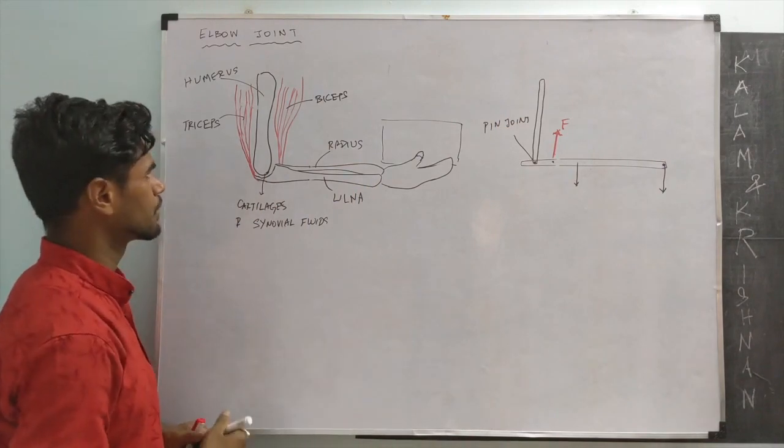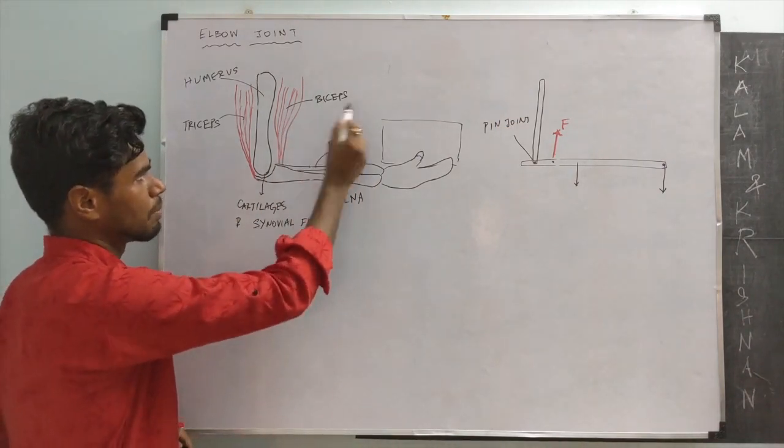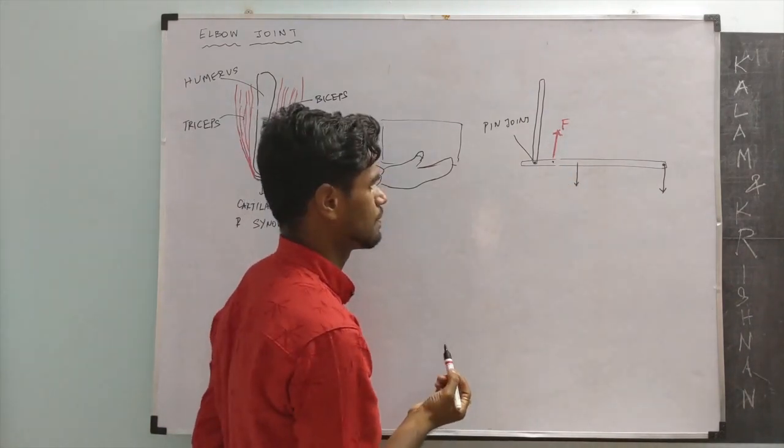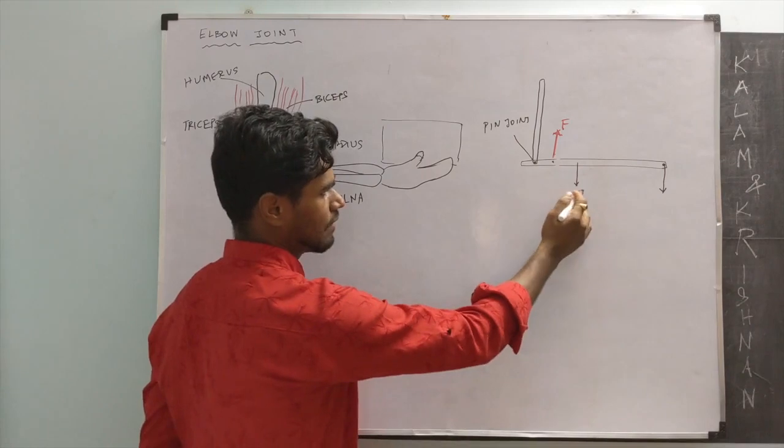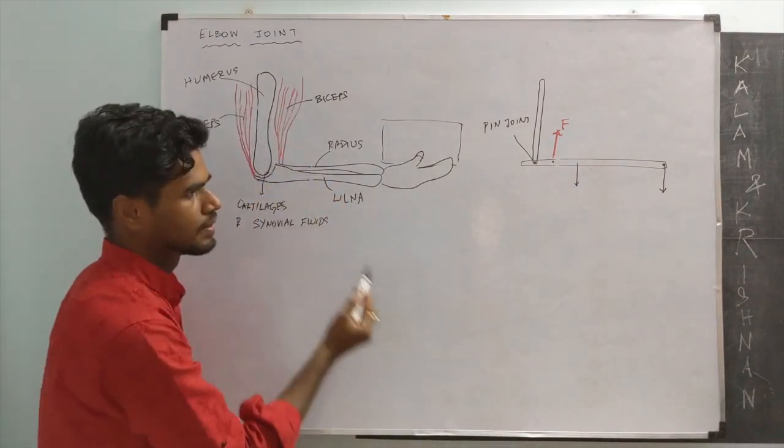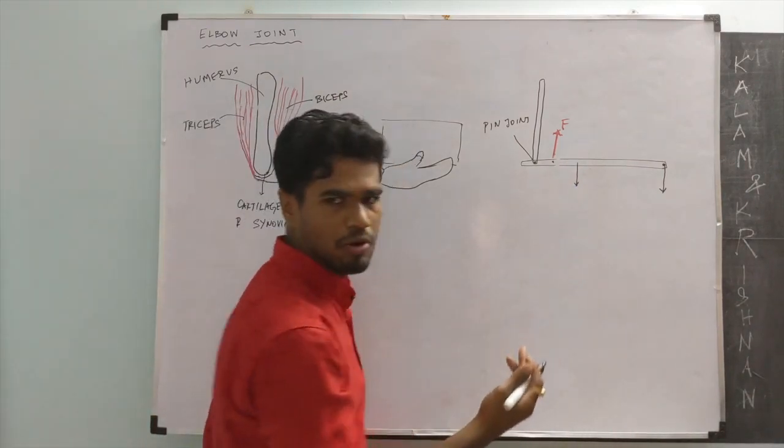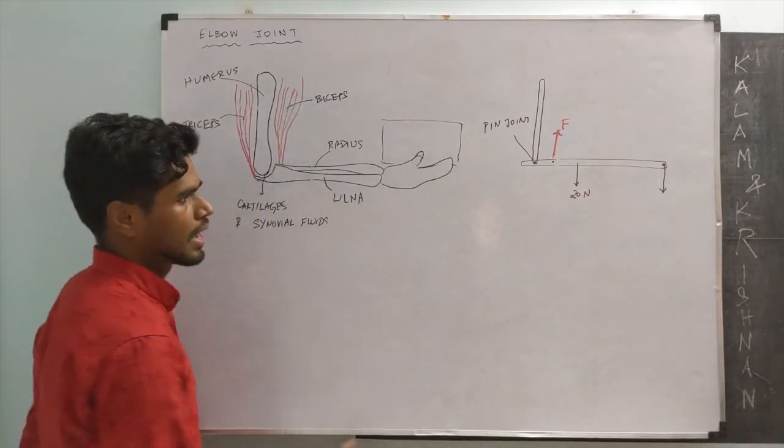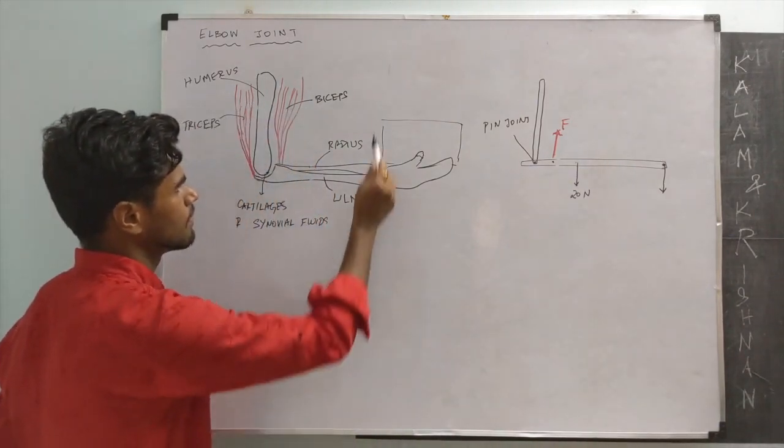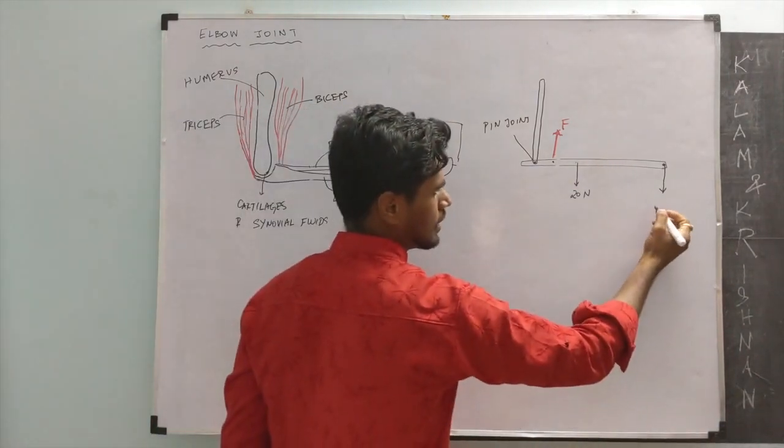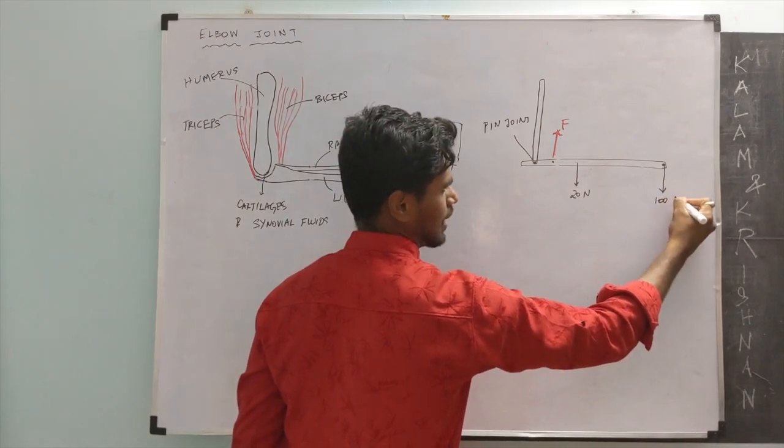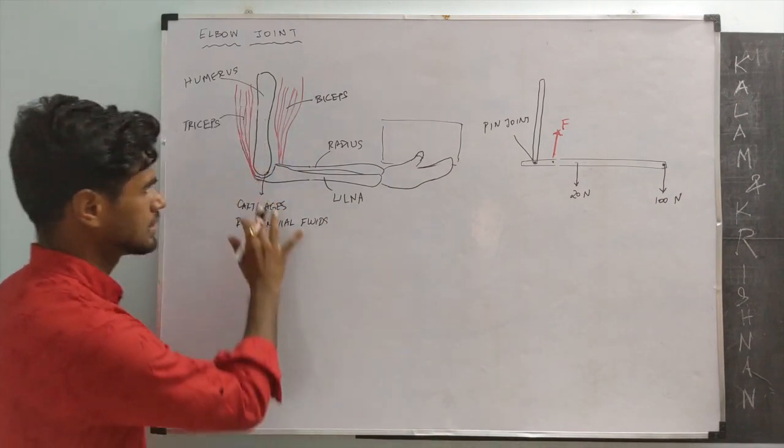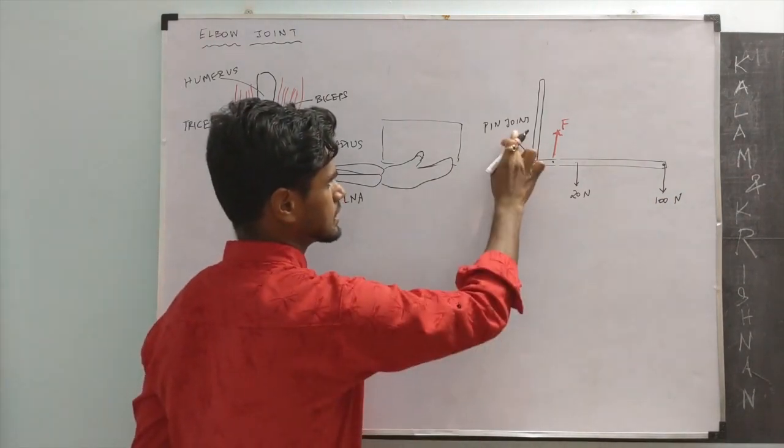Then, when we are holding a book, the muscles that are active are the biceps and we have the force due to the muscles, F. Then we have the weight of the hand, approximately 20 newtons acting at the CG of the hand. And then we have the weight of the book, let's say 100 newtons because it's a heavy book. This system can be mechanically approximated at this system.